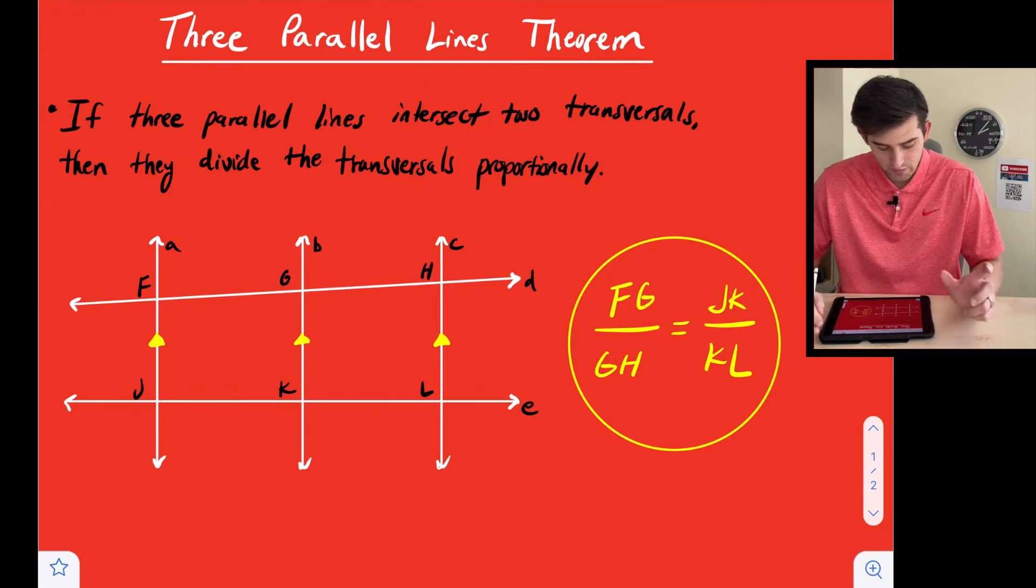So let's read what it says. It says if three parallel lines intersect two transversals, then they divide the transversals proportionally.